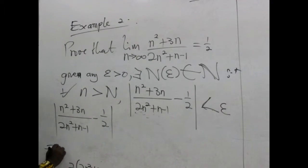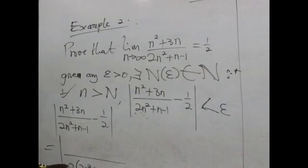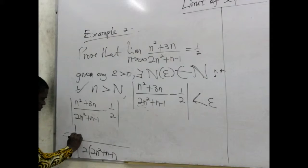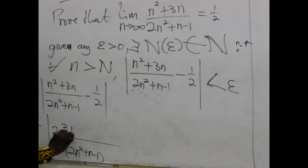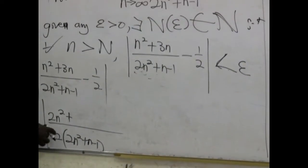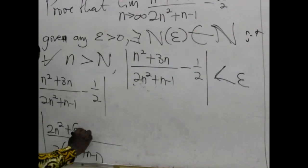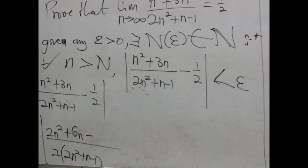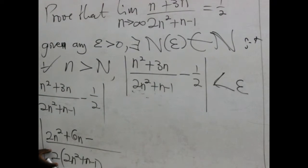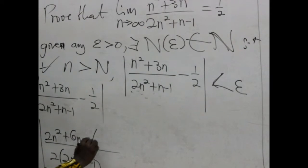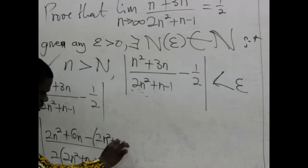The 2 here comes to cancel this. This can cancel all this, and 2 goes to multiply all this. We have 2n squared and plus, so 2 is still there, we have 6n. And minus. The 2 here comes to cancel this. We have 2n, so it's minus. We have 2n squared plus n minus 1.